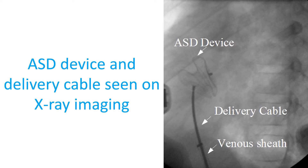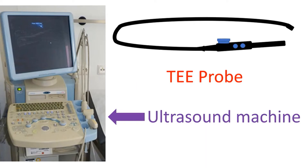Once both disks are in position, echocardiogram is done once again to check for any remaining leaks and whether the position of the device is acceptable. It should not be interfering with the function of nearby walls. If everything is fine, the device is released from the delivery system, which is then withdrawn and taken out. The suitability of ASD for device closure is decided by an echocardiogram test.